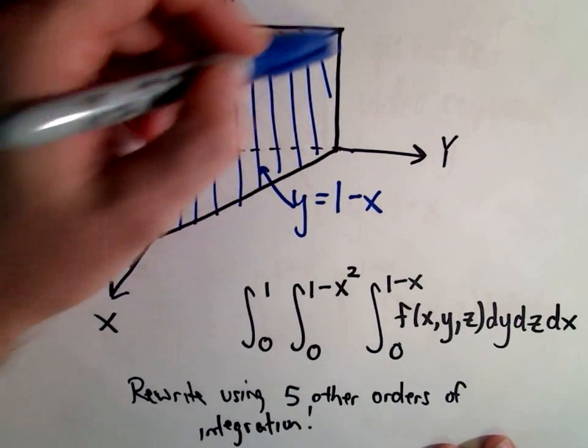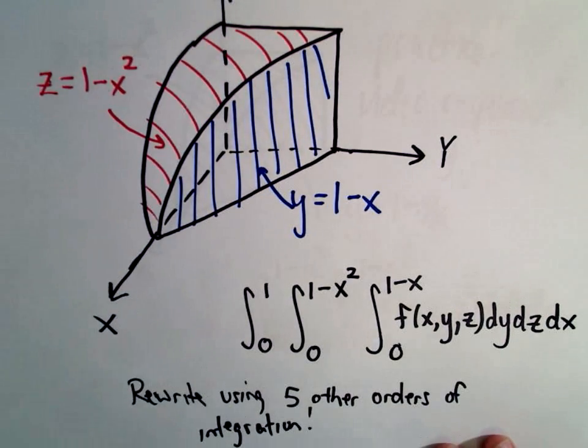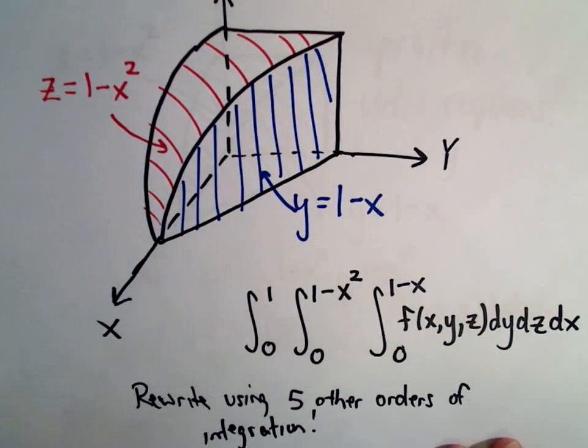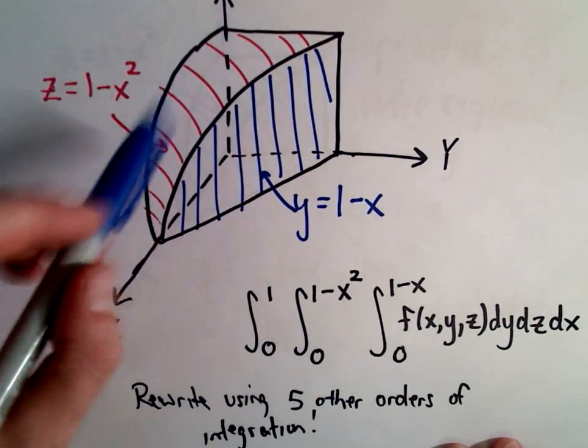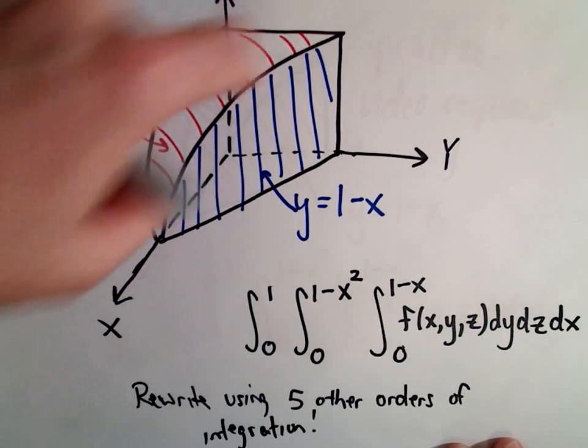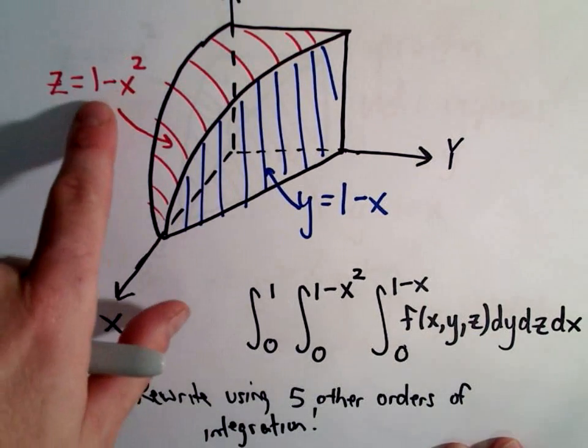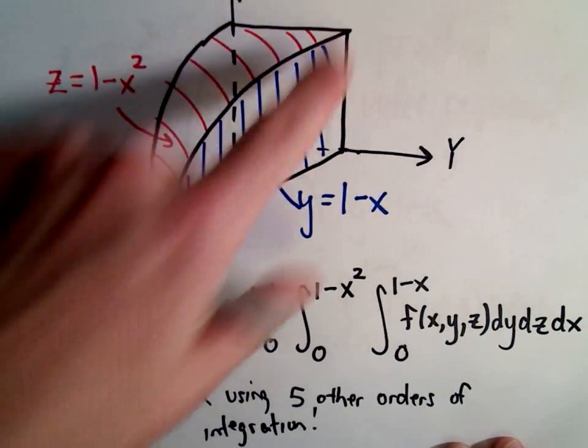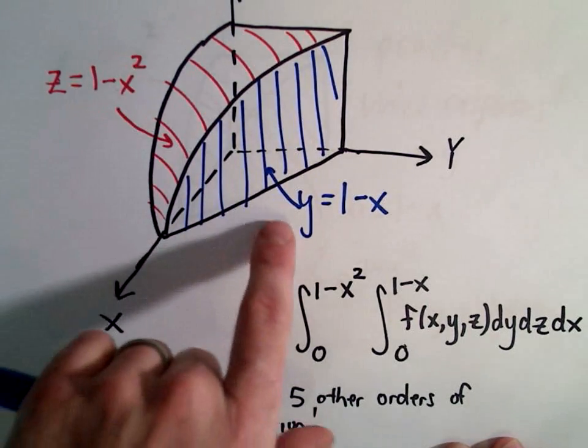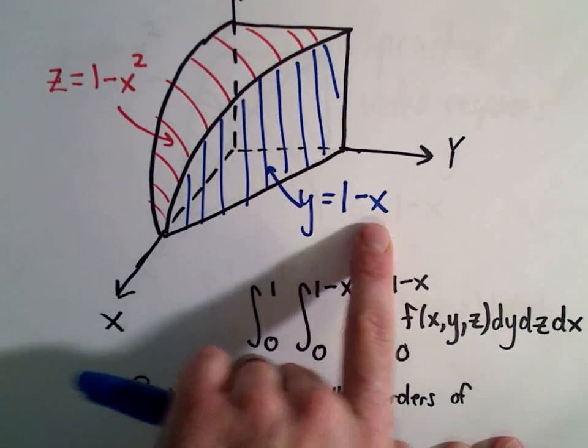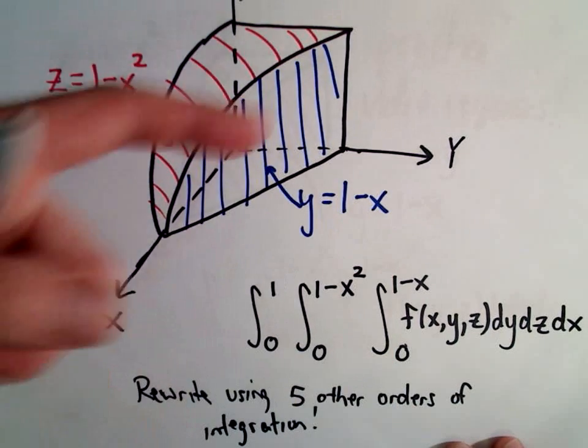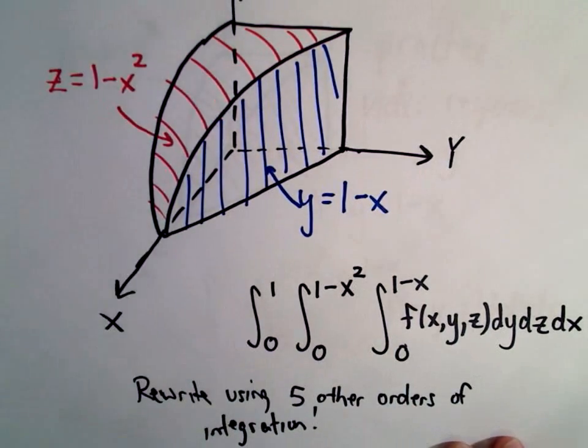What we're doing is we've got this little three-dimensional object that we're integrating over, kind of like a little wedge of cheese. The roof and front part of this wedge is the equation z equals 1 minus x squared. The side of it can be represented by the plane y equals 1 minus x. The back looks like the yz plane, the side is just the xz plane.